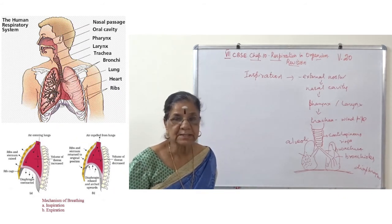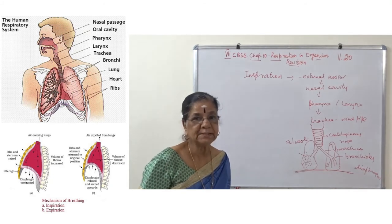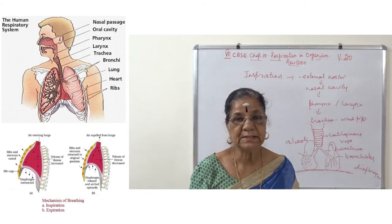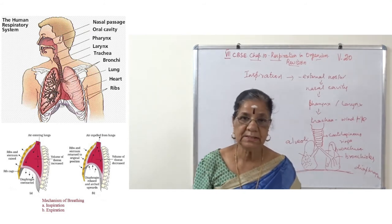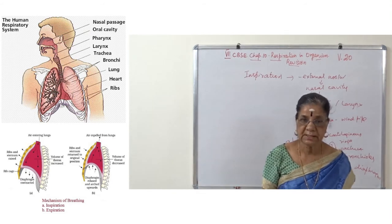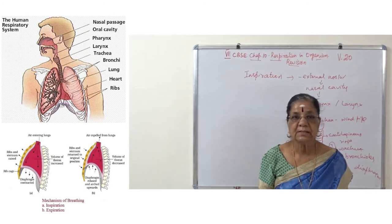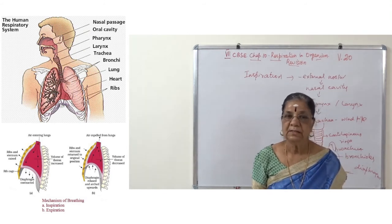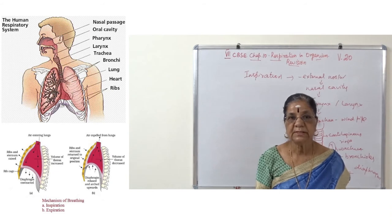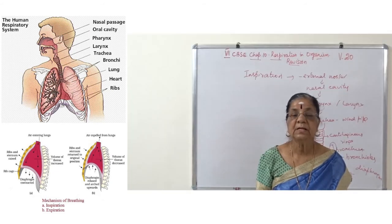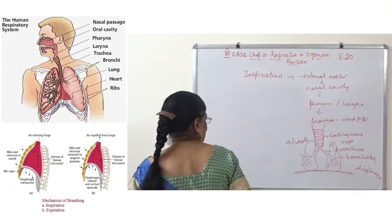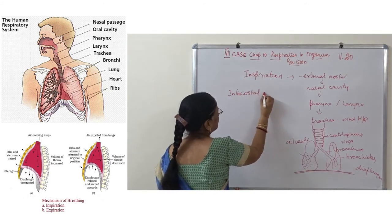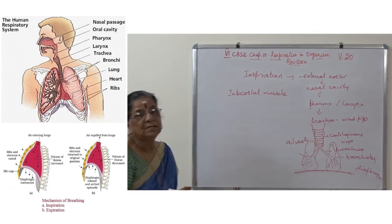The lungs are safely protected inside the ribcage. The ribcage is part of the axial skeleton, which includes the skull or cranium, the ribcage, and the vertebral column. Inside the ribcage, both the lungs and heart are well protected. The ribs are connected by intercostal muscles.